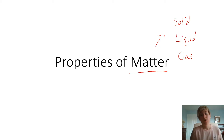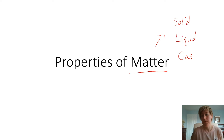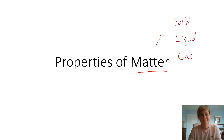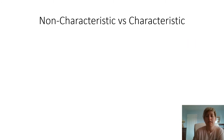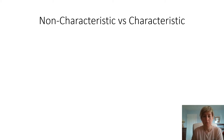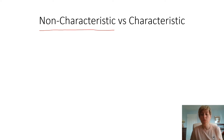Gas has no bonds holding the particles together, so it doesn't have any specific shape or any specific volume. What we're going to do today is go through our key properties of matter. The first thing we need to talk about is the difference between non-characteristic and characteristic properties. When looking at a non-characteristic property, we're looking at properties that can apply to more than one substance.